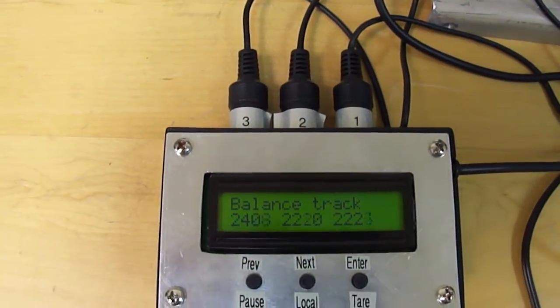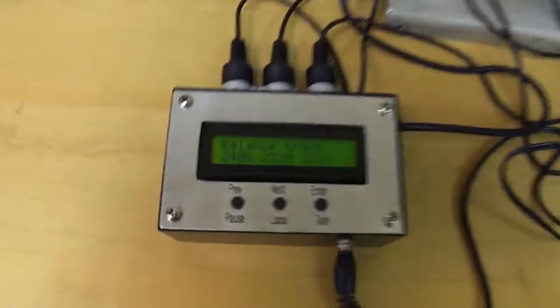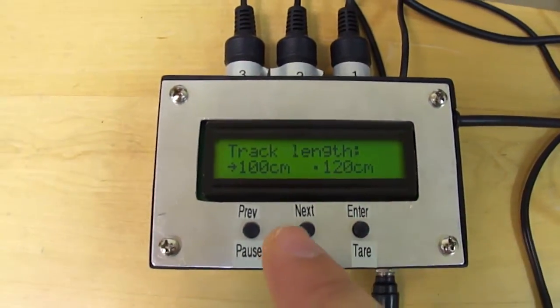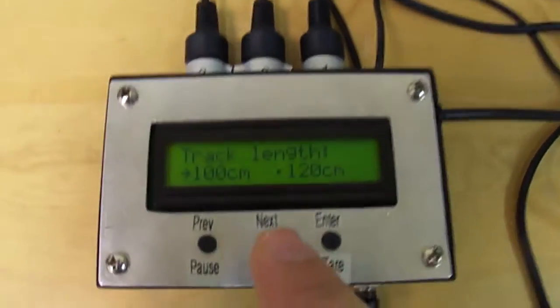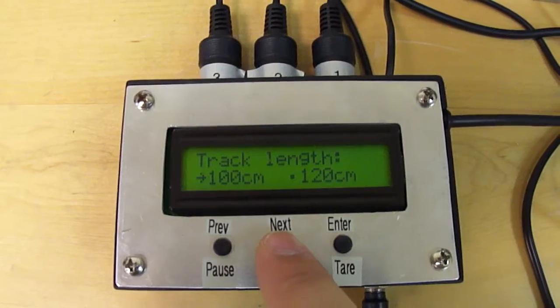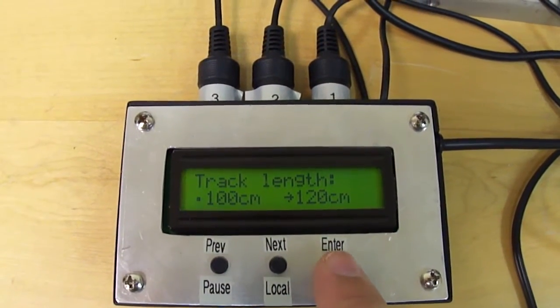Okay, so with the track balanced with nothing on top of it, you just press enter. The next step is to choose the track length. This one is 1.2 meter. So just use the previous and next, choose 1.2 meters and enter again.